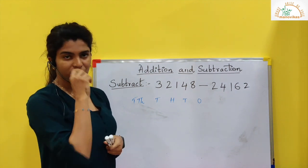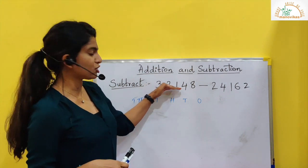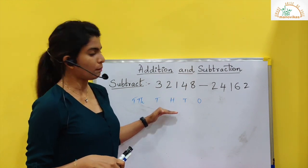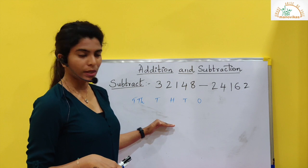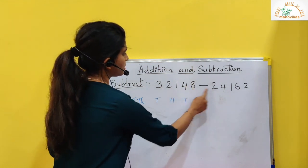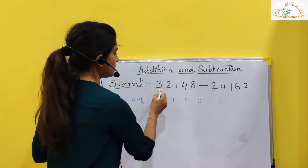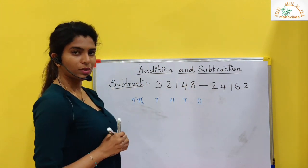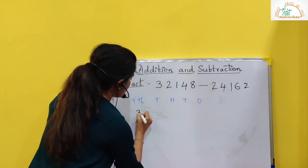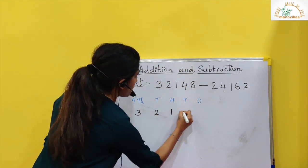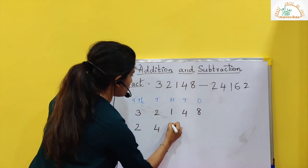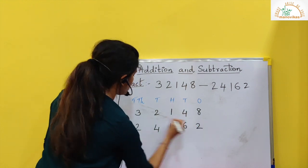Remember, when we are doing subtraction, I have to put the larger number on top and then the smaller number below that. So which is the largest number here? Both are 5 digits. But here we are starting with 3. So we will put the numbers: 3, 2, 1, 4, 8 on top and 2, 4, 1, 6, 2 below.